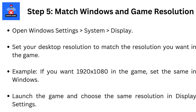Step 5: Match Windows and Game Resolution. Open Windows Settings, go to System, then Display. Set your desktop resolution to match the resolution you want in the game. For example, if you want 1920x1080 in the game, set the same in Windows. Launch the game and choose the same resolution in Display Settings.